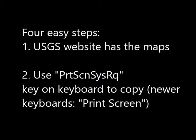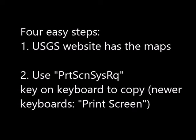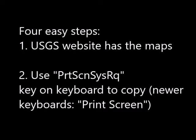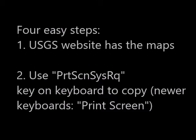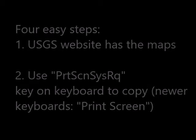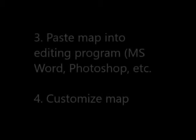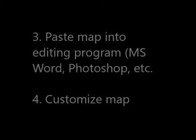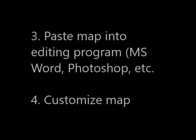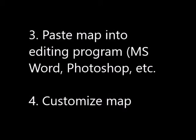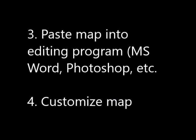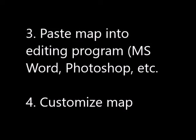Once you have the map that you want, you'll use the print screen system request key on the keyboard to copy the image. On newer keyboards, the key will probably just say print screen. The next thing you'll do is open up a program that allows editing of images — something like Microsoft Word will work, but Photoshop is better. There are a number of different programs that allow this.